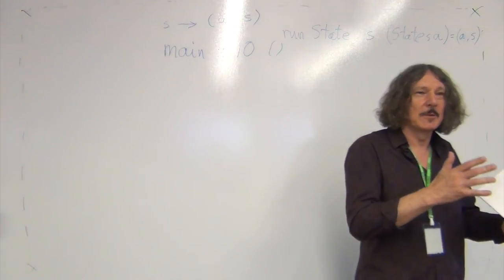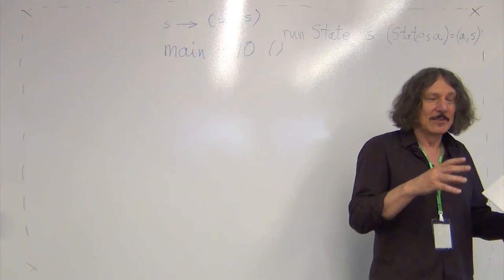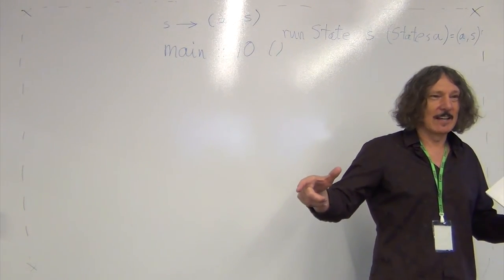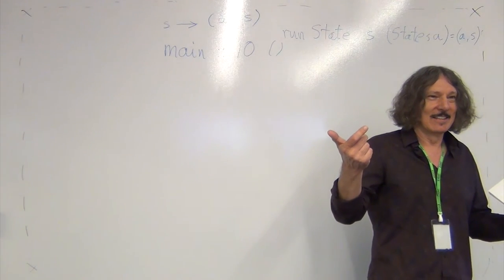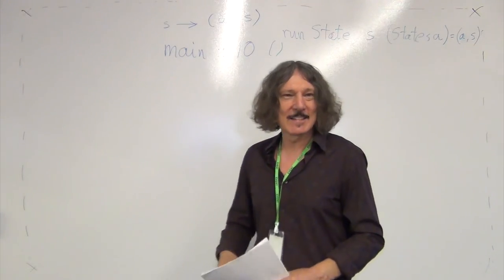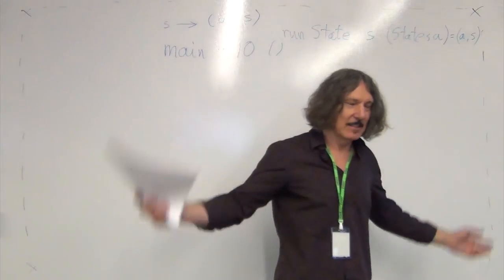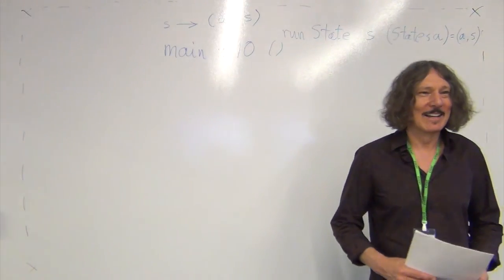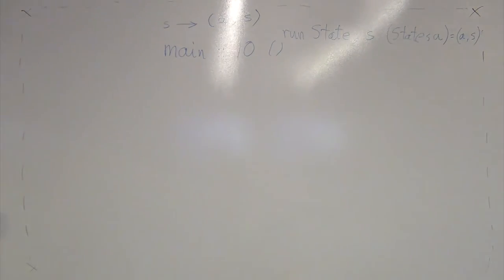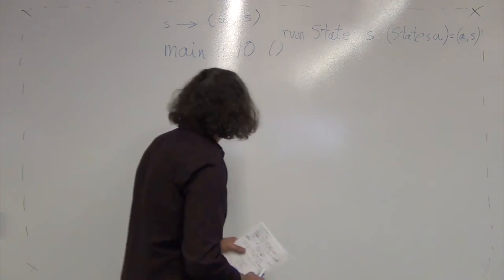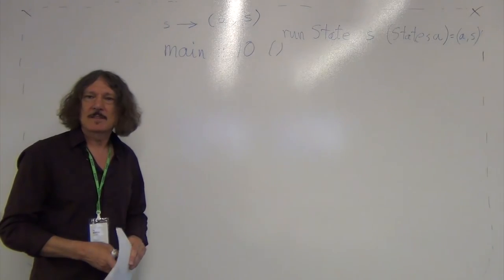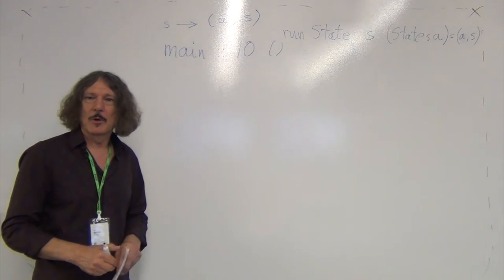If you think about it: if you have two stateful computations and you hide the state, running it twice will give a different answer the second time because your state has changed. Here the state is humongous — it's the universe — but conceptually it's the same thing. So let me write some code to familiarize ourselves with the IO Monad and how it's used.